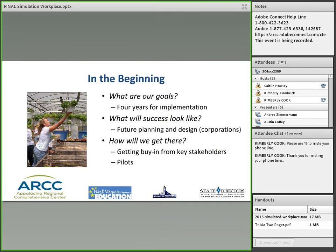Our goals were ambitious — we were changing the whole culture of career technical education. We knew we couldn't start statewide, so we set aside four years for our implementation process. We began with pilots, then expanded every year — starting with 80 sites and growing to 501 sites. By 2016, this is how we will do business in West Virginia. When we first started, we had to get buy-in from our key stakeholders: business people, instructors, students, and everyone involved in making simulated workplace happen.